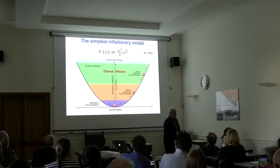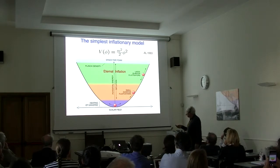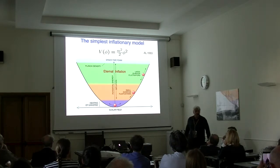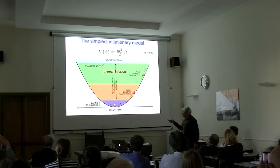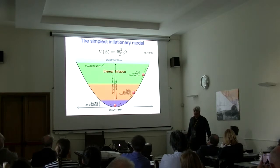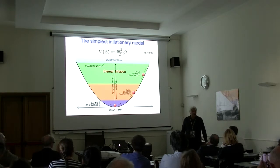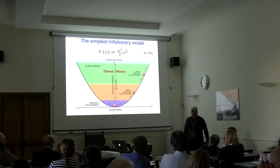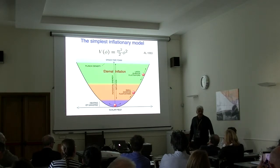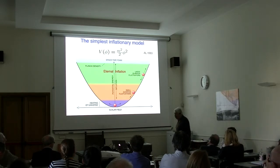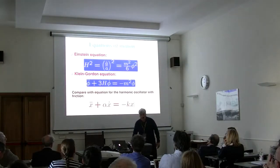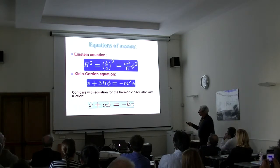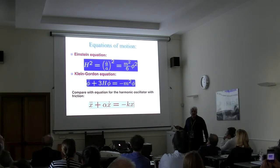We know theories like the Higgs field, which has a much more complicated potential than the basic one. This simple model was quite popular because of its simplicity, but in recent years it was ruled out due to its prediction of too large an amplitude of gravitational waves. Very recently it was resurrected in the form of alpha attractors. Let's start pedagogically with this simple model.